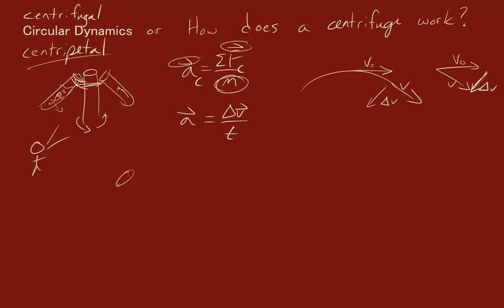So what will happen as the spinning occurs - the denser material, the plasma, will experience a greater inward acceleration whereas the red blood cells will experience less inward acceleration because they're denser, more inertia. And we have now separated the plasma from the cells.